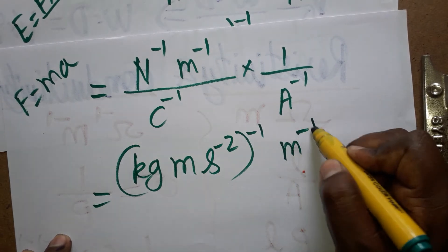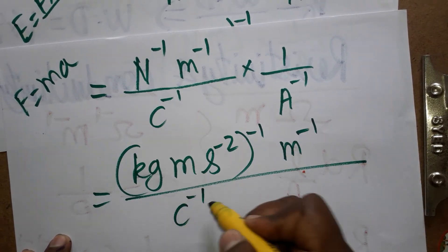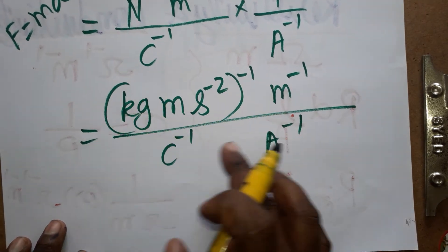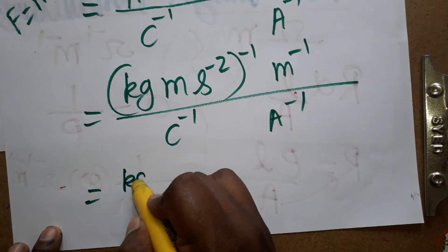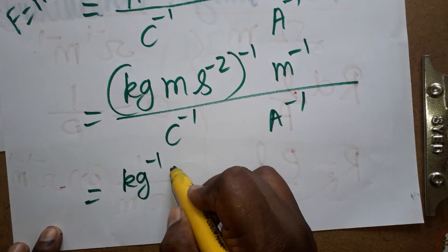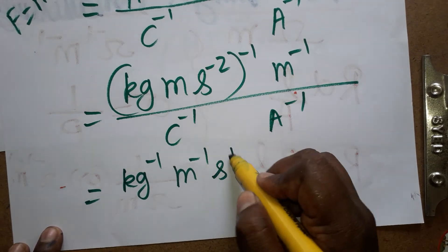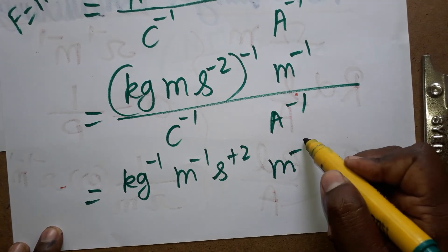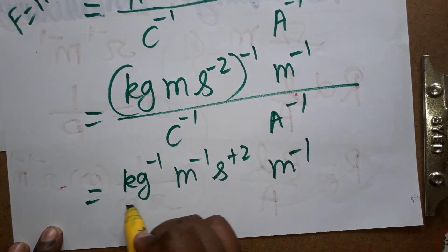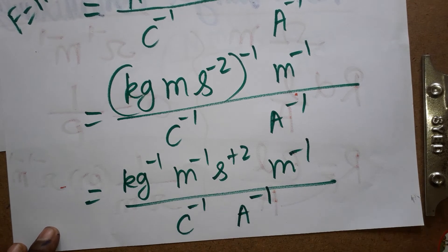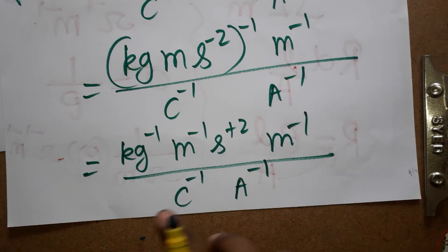Substituting newton as kg·m·s⁻², and taking its inverse, we get kg inverse, meter to the power minus one, second to the power plus two, times meter inverse, divided by coulombs inverse times ampere inverse. Now we are going to convert coulombs into ampere.